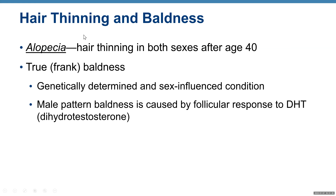Hair thinning and baldness: alopecia is hair thinning in both sexes after age 40, so yes, our hair gets thinner as we age. But alopecia is not the same as true or frank baldness. True baldness is a genetically determined and sex-influenced condition. We have male pattern baldness and female pattern baldness. Male pattern baldness is caused by a follicular response to a special form of testosterone.